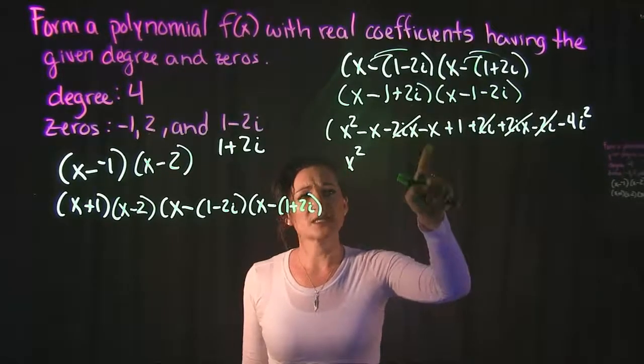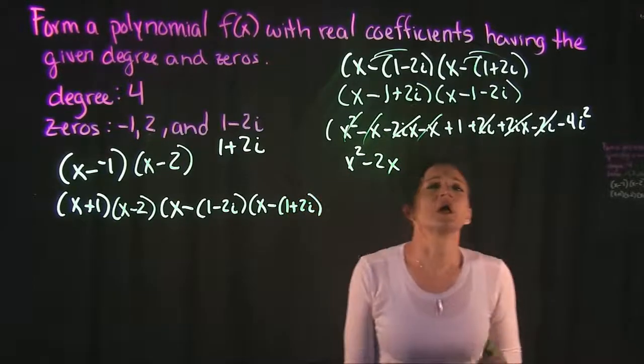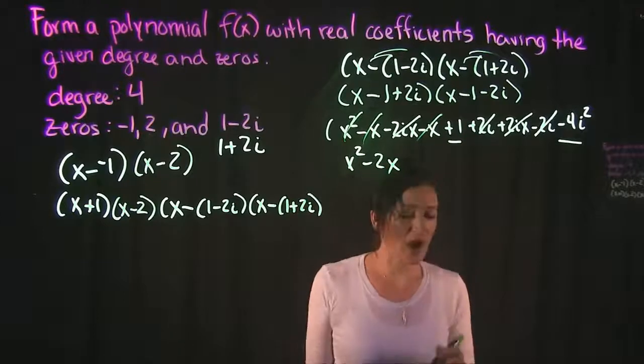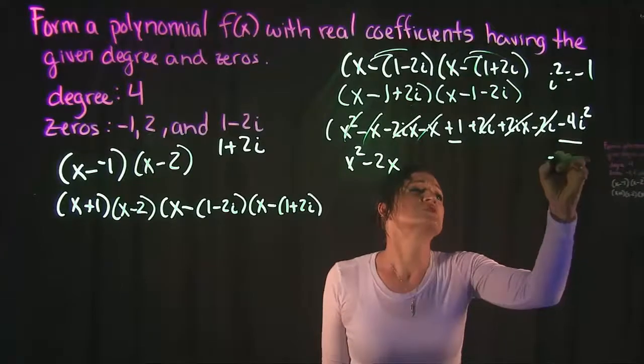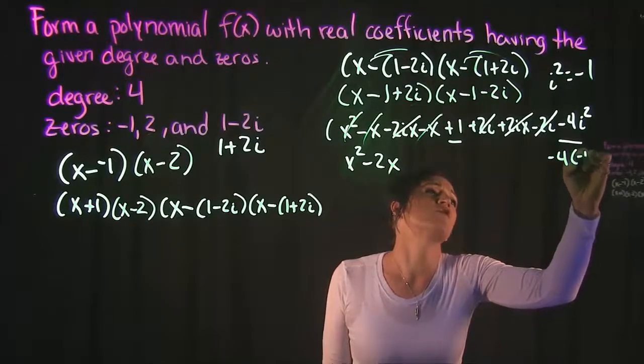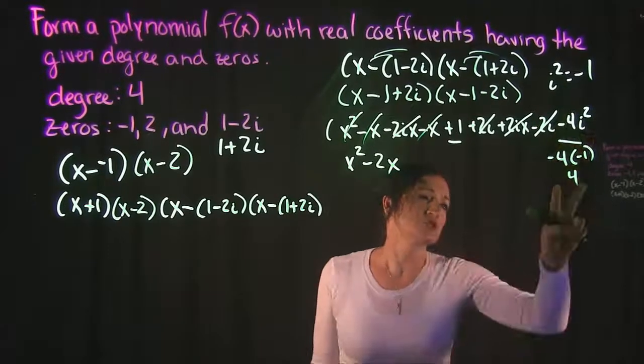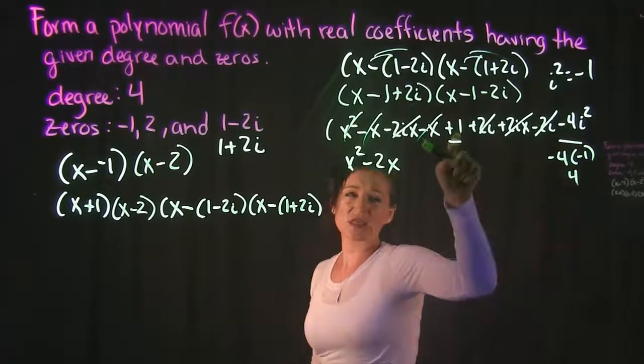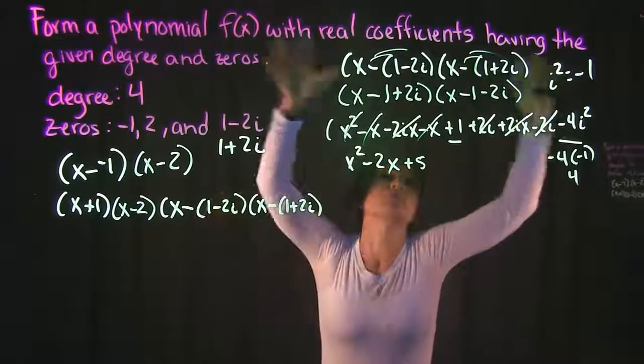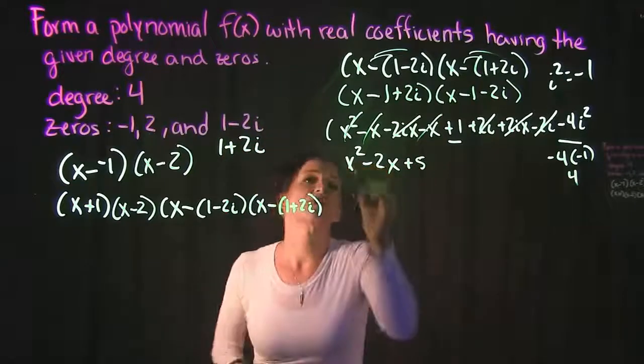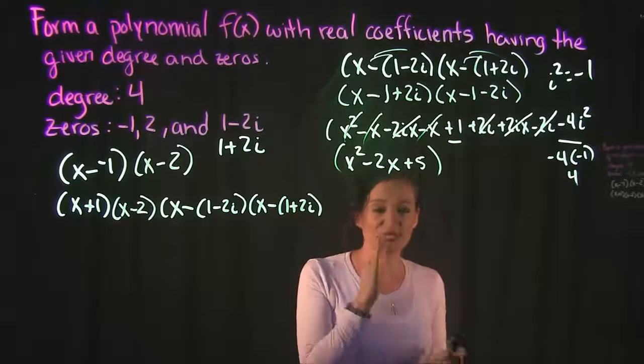The only thing I have left is the 1 and the negative 4i squared. Remember that i squared is equal to negative 1. So that means that this is really negative 4 times negative 1, which makes this a positive 4. So that positive 4 could get added with this positive 1 to give us plus 5. So when we multiply and simplify these two factors together we get x squared minus 2x plus 5.